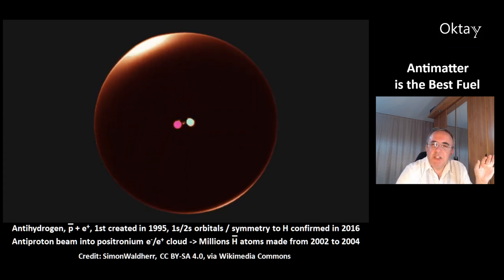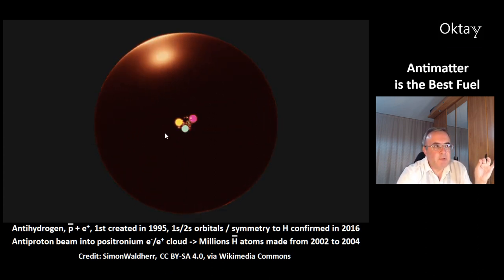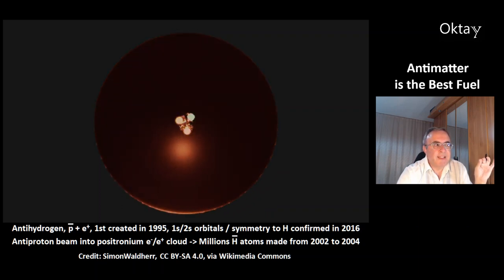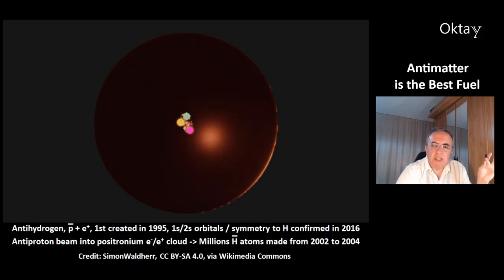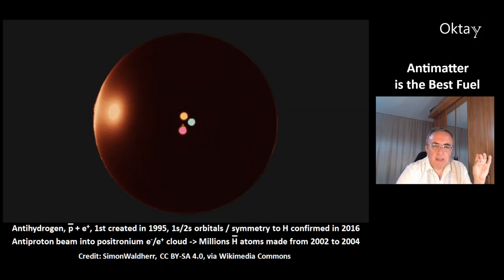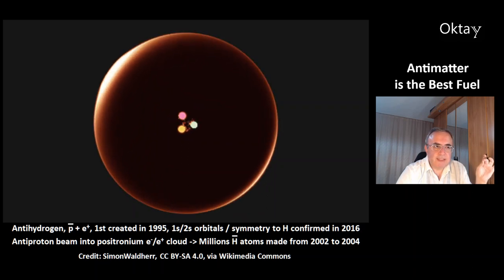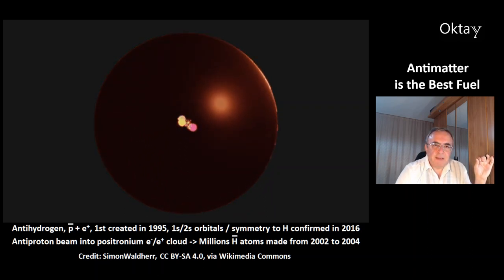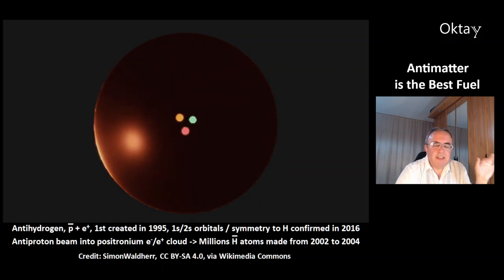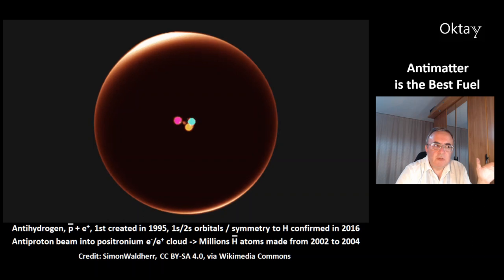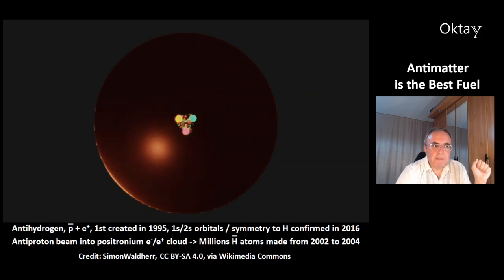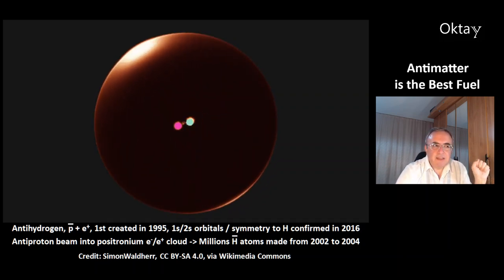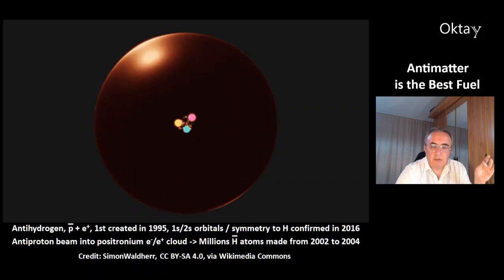This is an animation of antihydrogen. It consists of an antiproton — you can see the three antiquarks in the center — orbited by a positron. The first antihydrogen atom was produced in 1995. Like normal hydrogen, it has 1s and 2s orbitals. A symmetry to normal hydrogen was confirmed in 2016. Antihydrogen is made by sending an antiproton beam into positronium — a pair of a positron and an electron orbiting each other. With this method, millions of antihydrogen atoms were made between 2002 and 2004.